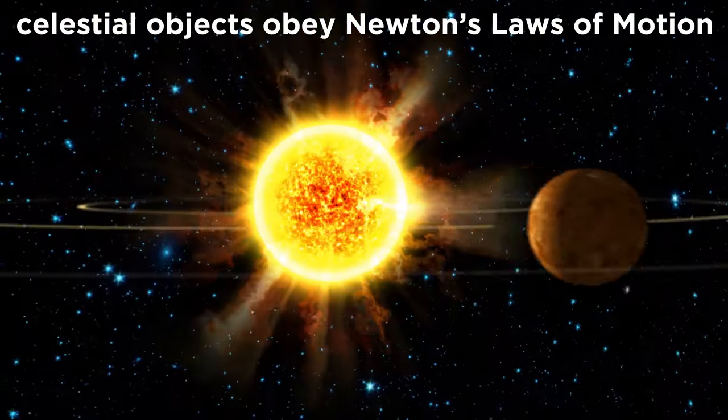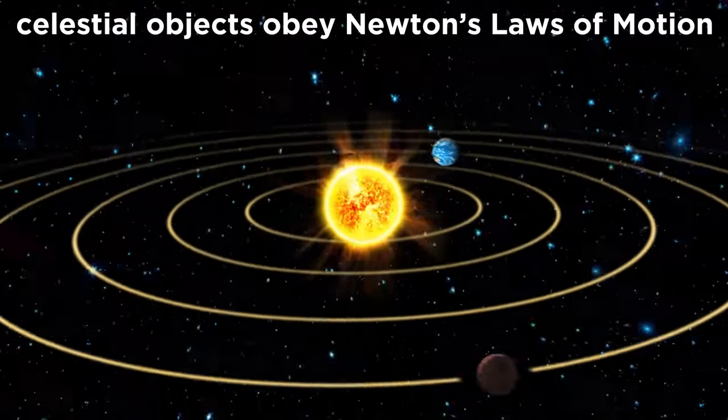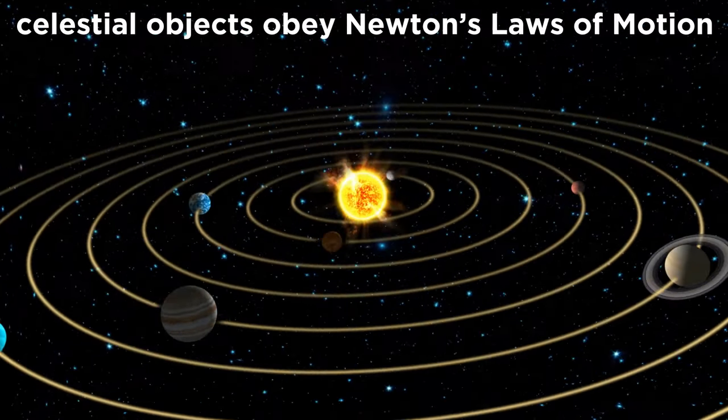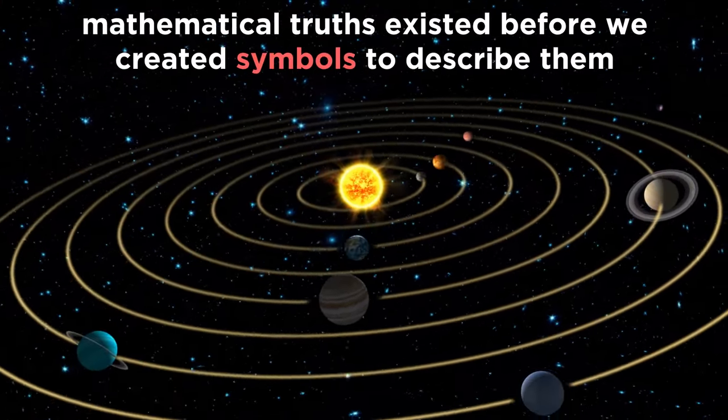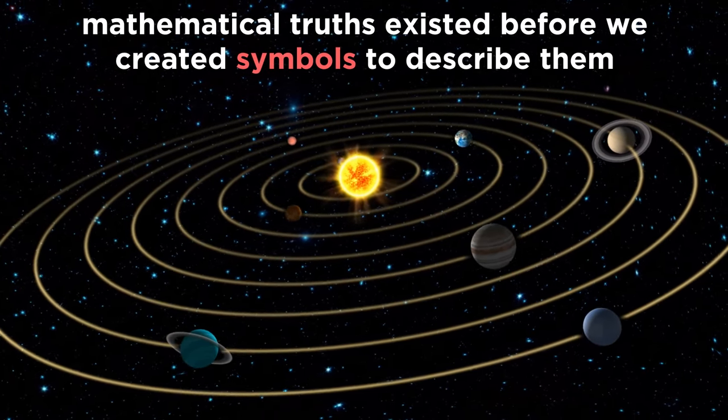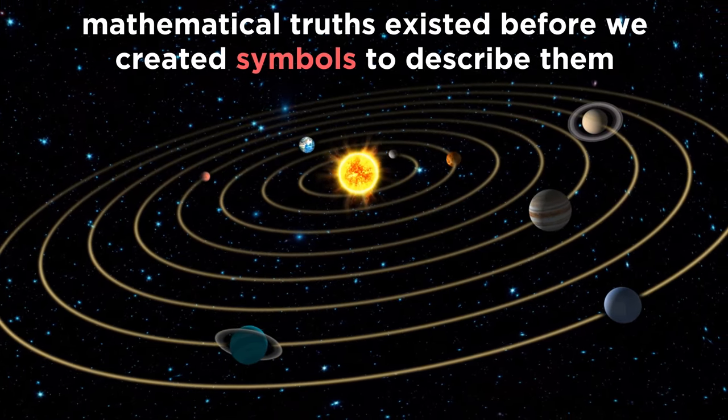Objects in the night sky obey mathematical laws of motion that exist whether we write them down or not, which means that mathematical truths have their own existence, independent of humans and our symbols.